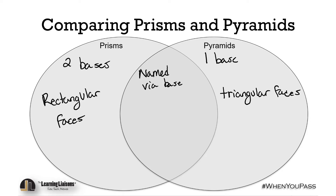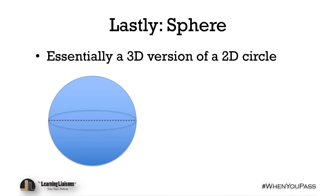That's pretty much it for comparing and identifying simple 3D objects. Moving on, we have our last 3D shape: a sphere. Essentially, it's just a circle in 3D form. If you had a circle and rotated it really fast, it would look something like a sphere — it's just a ball. Think about any ball you can think of, and there you go. We won't get into the surface area or volume because that won't be asked in this skill.